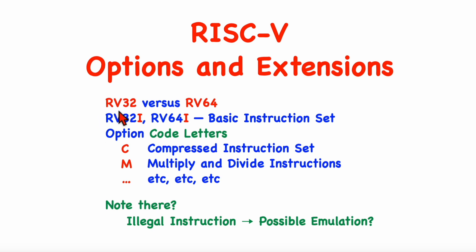First, we have either RV32 or RV64 to indicate the register size, and that can be followed by additional letters to provide more detail. The I just means that the basic instruction set is implemented, which is really the minimum you'd ever want. This can be followed by additional letters to indicate which optional functionality is implemented.